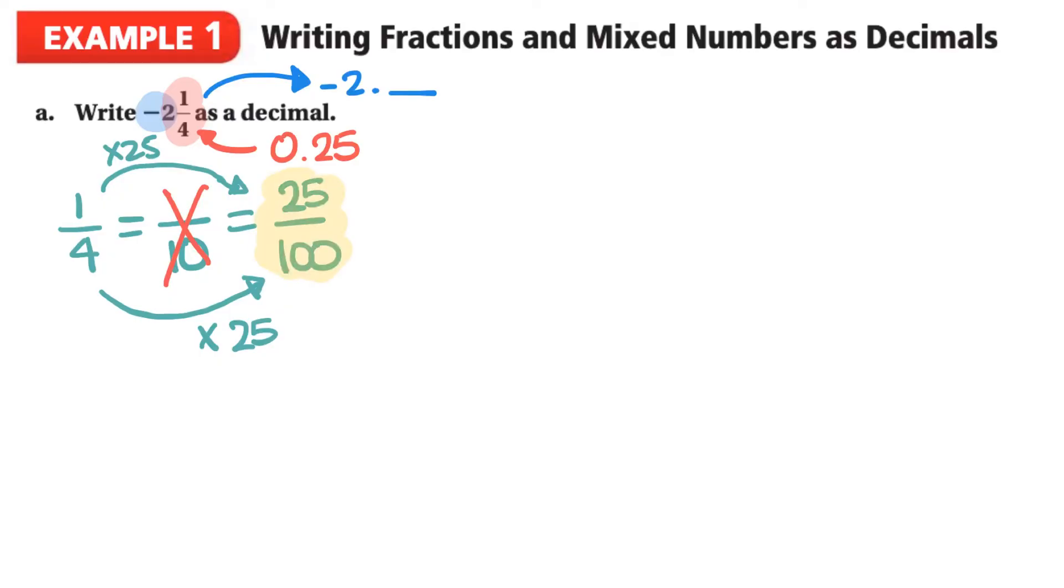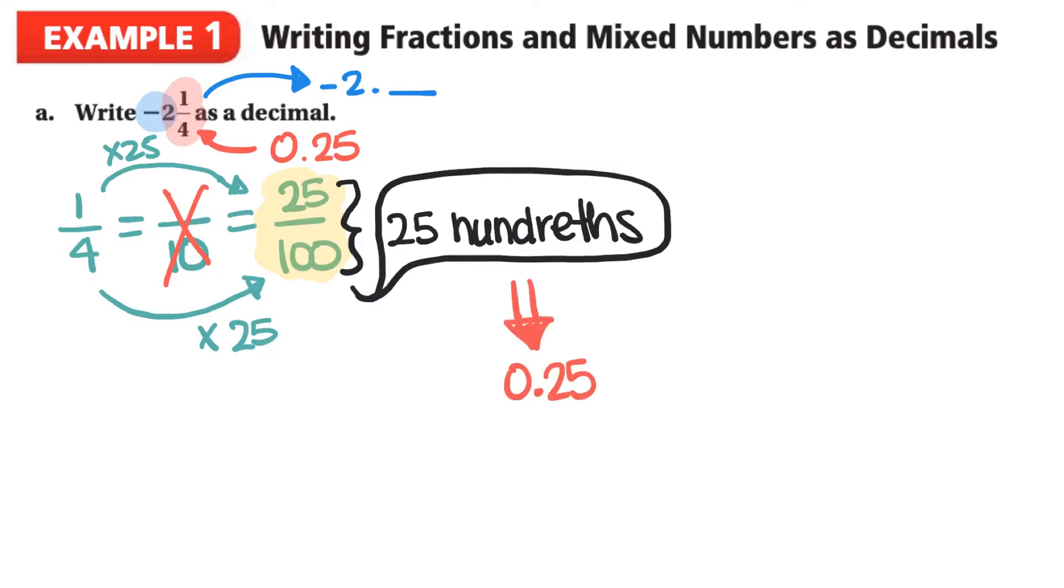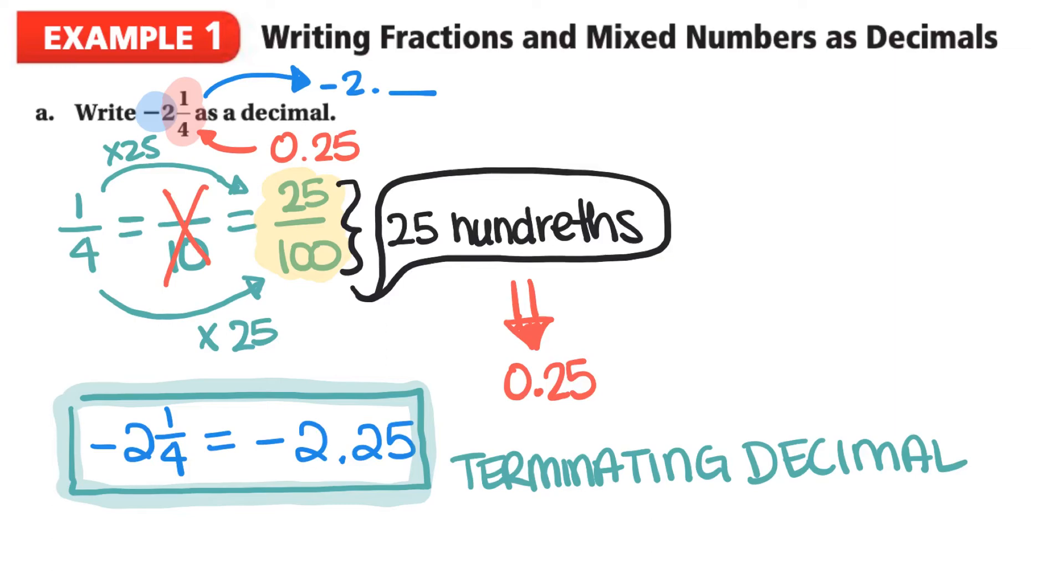But we do know that this fraction is actually, or said as 25 hundredths. Remember that S at the end? And we know that 25 hundredths is just written as 0.25. So therefore, we can show that negative 2 and 1 quarter is equal to the decimal negative 2.25. And this one here is called a terminating decimal because it doesn't repeat.